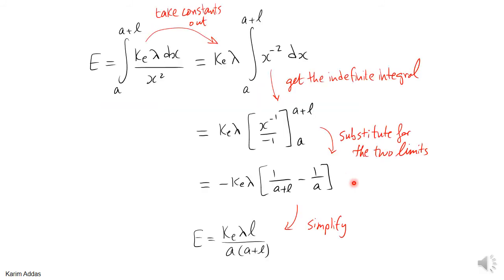To do the integration: ke and λ are constants so they factor out. We integrate x⁻² dx, which gives x⁻¹ over −1. Substituting the upper limit a plus l and the lower limit a gives an expression which, when simplified by taking a common denominator, yields the final result for the total electric field at point P due to the rod.